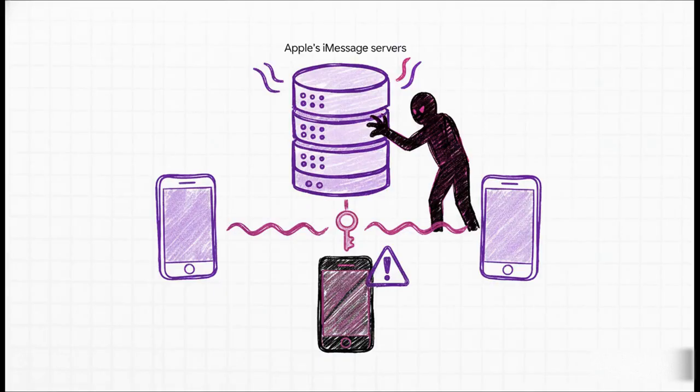Moving up to the service layer, we have iMessage Contact Key Verification. Let's be crystal clear: this is not a tool to prevent phishing. Its purpose is very specific — to defend against sophisticated, nation-state-level attacks that might target Apple's own iMessage servers. It provides automatic verification and will alert you if an unrecognized device is suddenly added to a conversation, which could indicate a man-in-the-middle attack. For higher assurance, you can even do manual, out-of-band code comparisons.